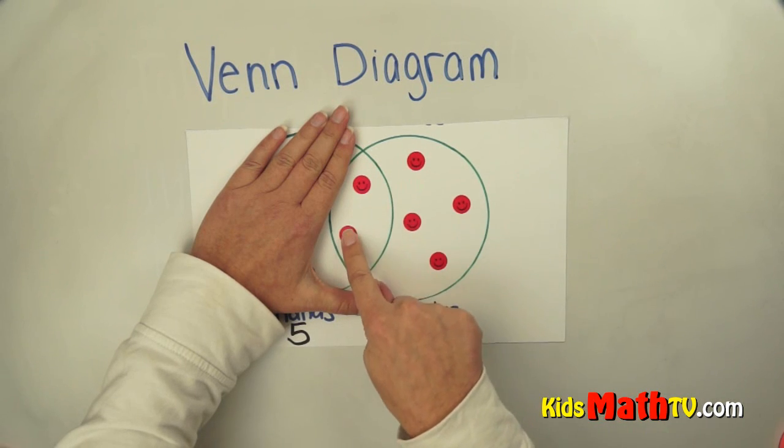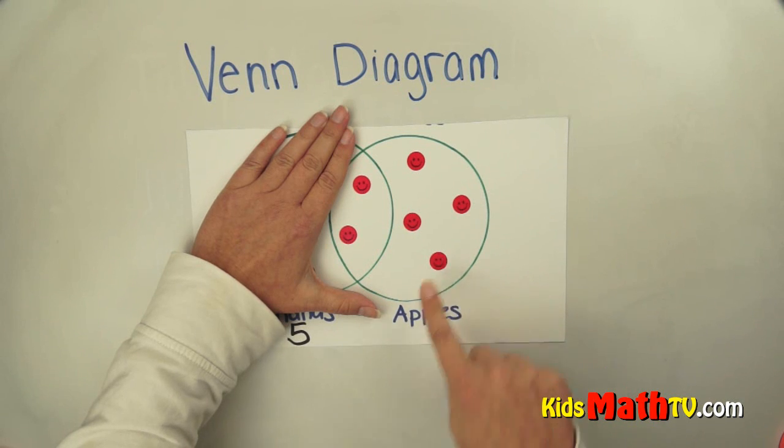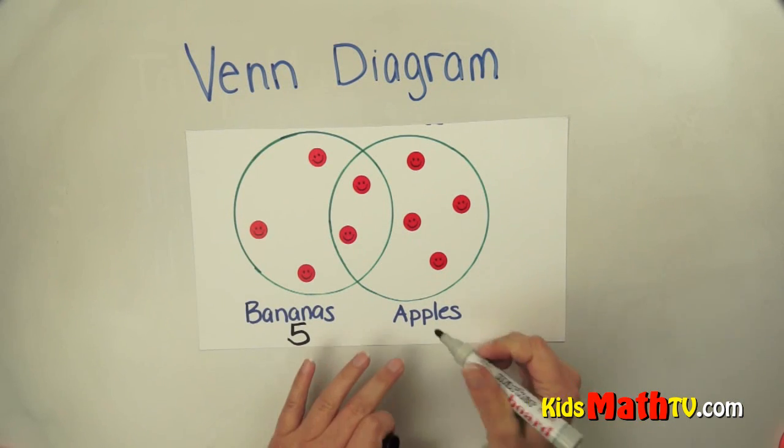1, 2, 3, 4, 5, 6. So 6 people like apples.